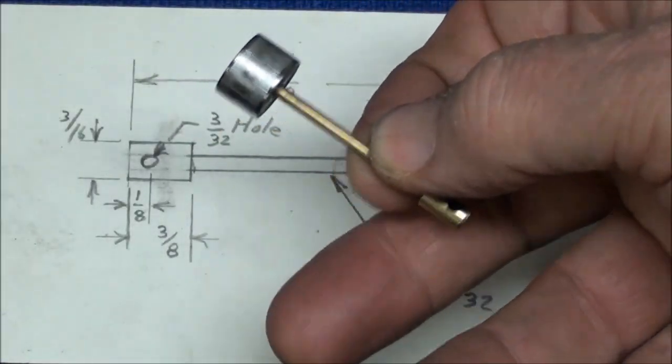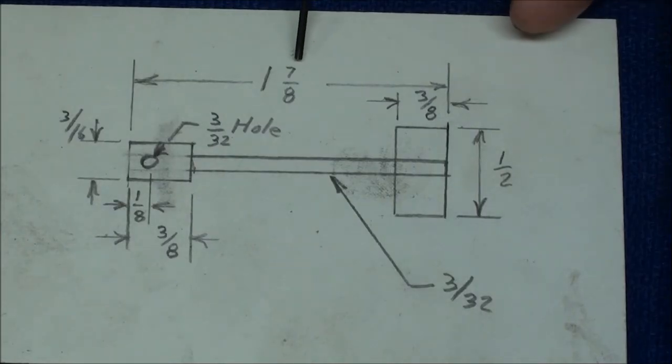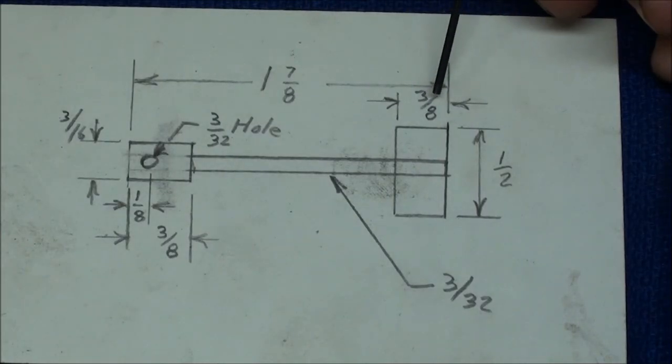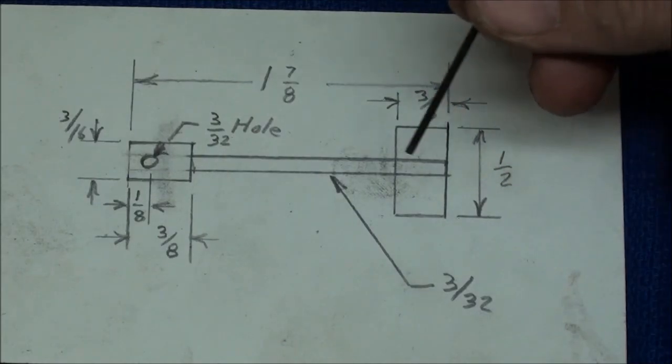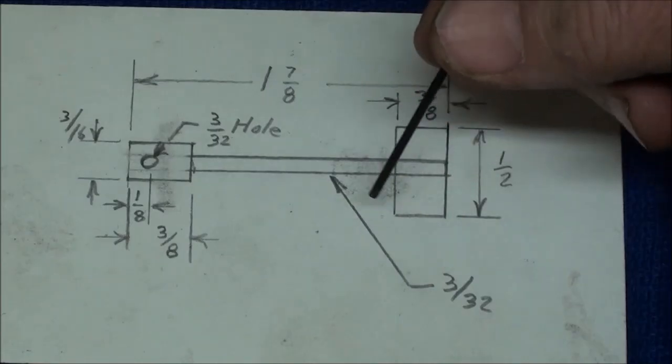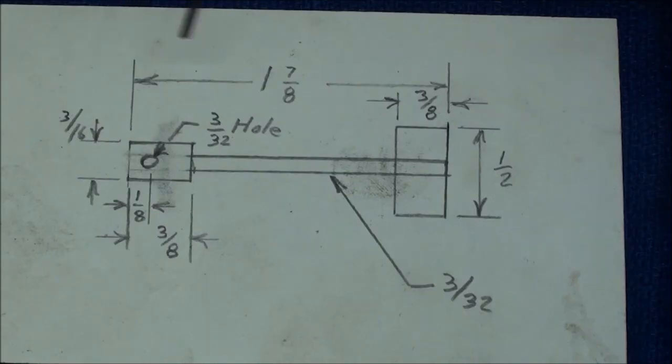For this little assembly I was forced to make an actual little sketch, and this is not necessarily to scale. But as you can see here, the overall length of the assembly is one and seven eighths. The piston itself is three eighths thick, and that's half inch diameter. The rod, a little brass rod, is three thirty-seconds diameter.